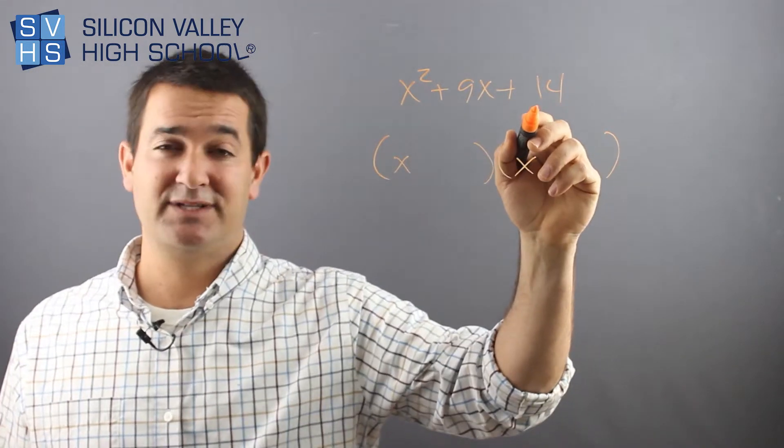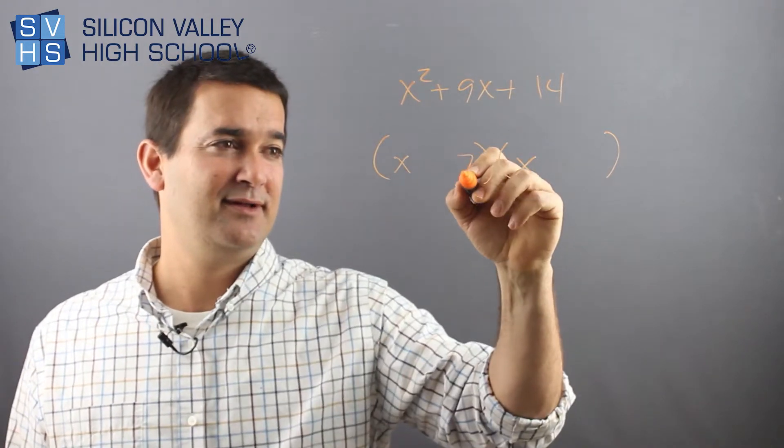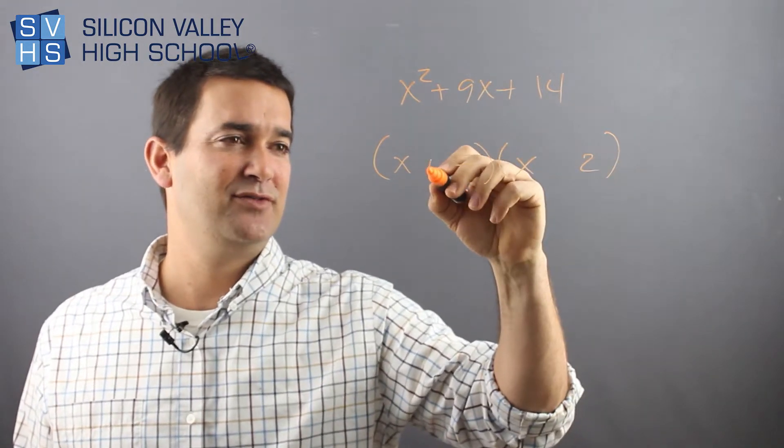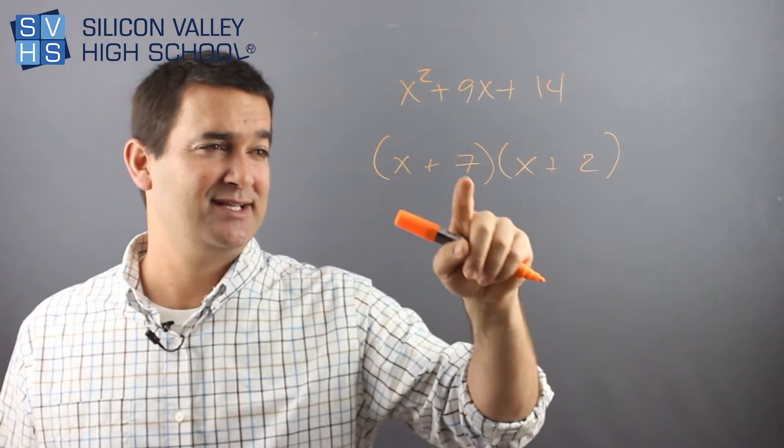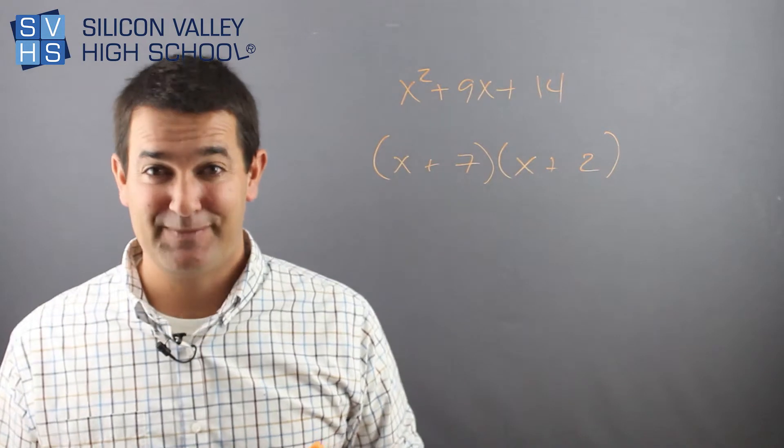Now here, multiplies to be 14, adds to be 9. It's either 14 and 1 or 7 and 2. Looks to me like 7 and 2, they're both plus. More importantly, let's check it. 7 times 2 is 14. 7 plus 2 is 9. It's a miracle.